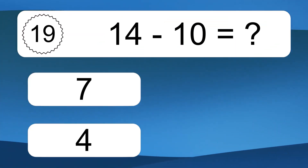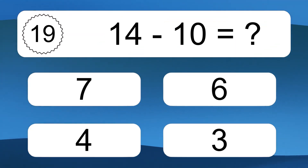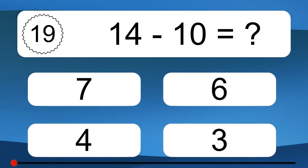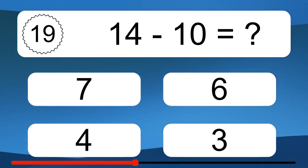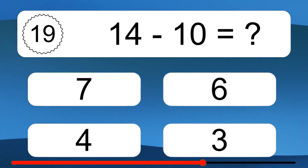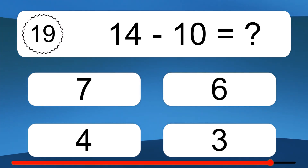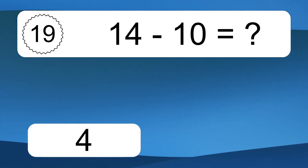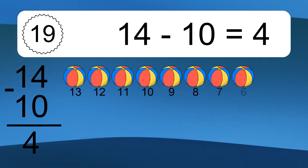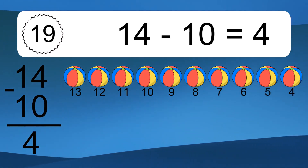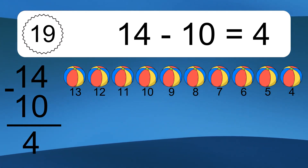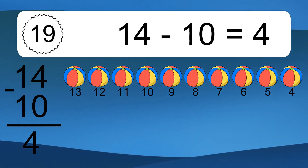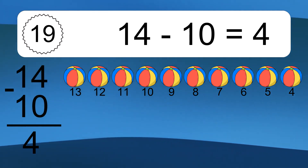14 minus 10 equals what? 14 minus 10 equals 4. Let's count it: 13, 12, 11, 10, 9, 8, 7, 6, 5, 4.